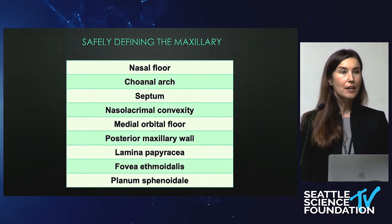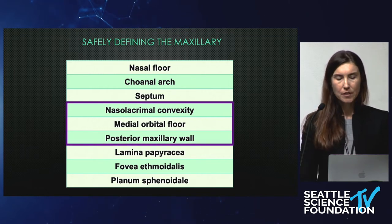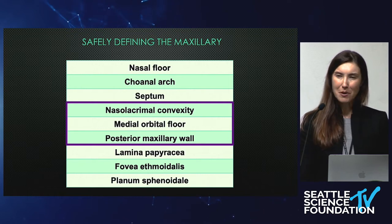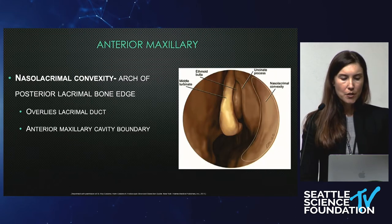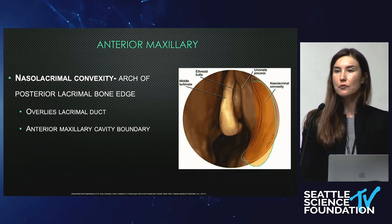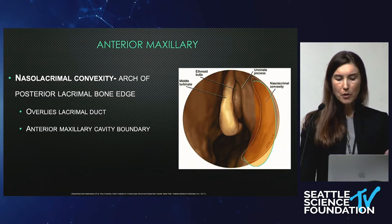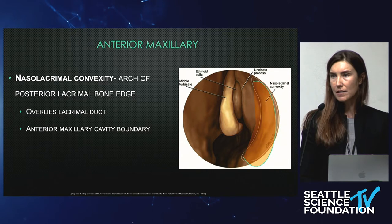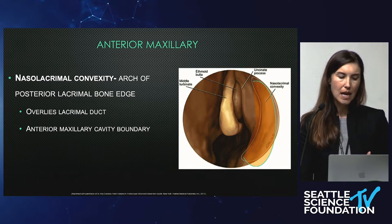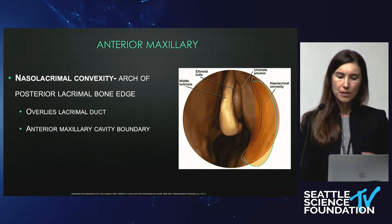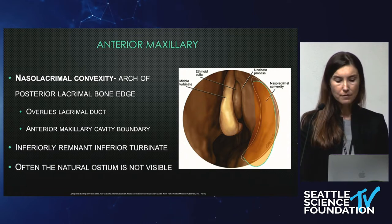Once you have that, now you really want to be looking at where your sinuses are and defining those boundaries, and that really starts with the maxillary. The maxillary sinus landmarks are your nasal lacrimal convexity, the medial orbital floor, and the posterior maxillary wall. When you open up your anterior maxillary, the first thing you're looking at is this nasal lacrimal convexity — that arch of the posterior lacrimal bone edge — which tells you what overlies the lacrimal duct. Most patients will still have this bone, and this defines that anterior cavity boundary.